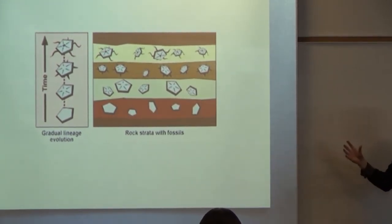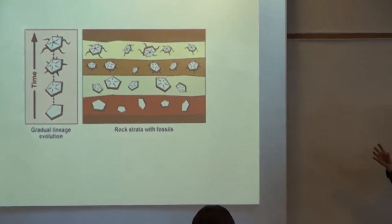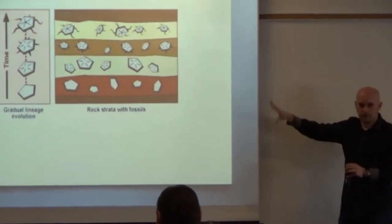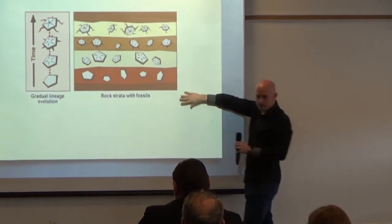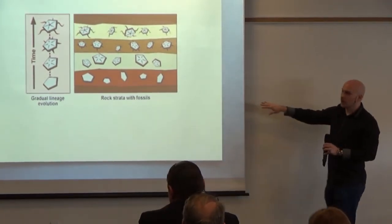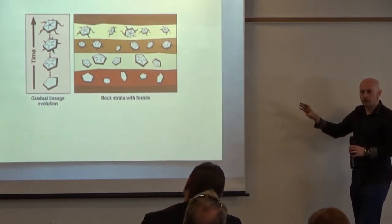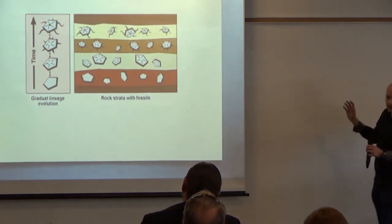Now, it would be very easy for this not to be the case, right? Imagine if all of this were jumbled up. The complex guys were mixed down here, in the deeper layers, this prediction wouldn't hold up. But, when we look at intact rock strata, this is what we find. So, in this case, what we're predicting, if the hypothesis of evolution is true, stands up pretty well.